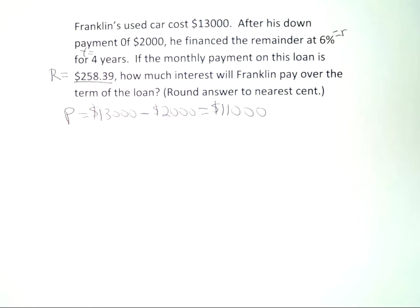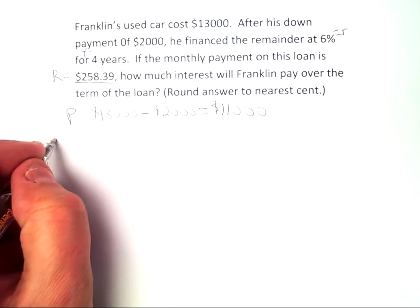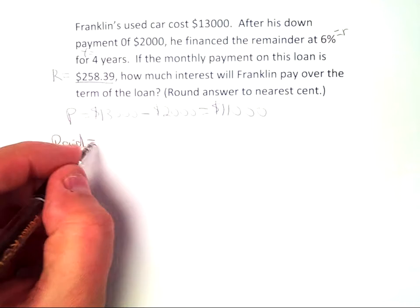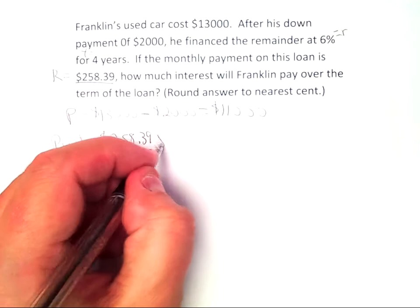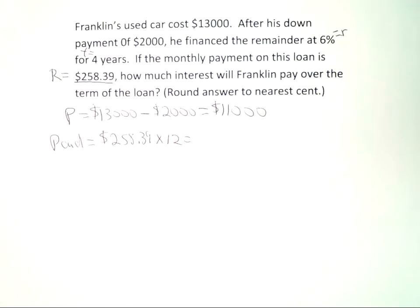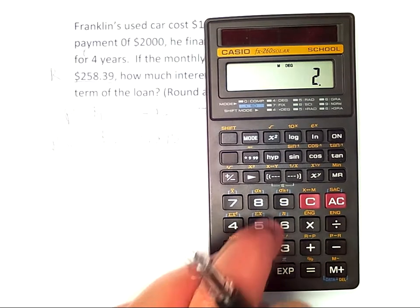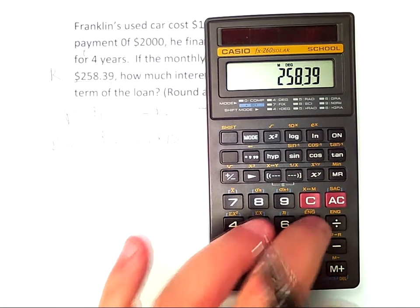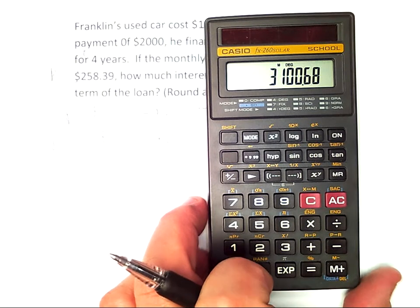Now, it's asking us how much interest he'll pay over the term of the loan. Franklin's paying $258.39 every month. If he paid $258.39 every month for 12 months, that's one year — we can figure that out pretty easily. $258.39 times 12 equals $3,100.68 each year.